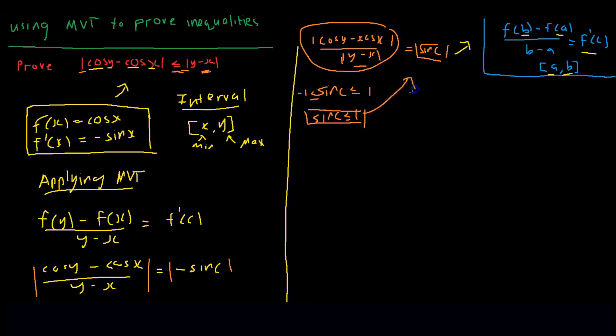Applying this back into this, we have the absolute value of cos y minus cos x over absolute value of y minus x is equal to sin of c, which is less than or equal to 1. Now, we have absolute value of cos y minus cos x over absolute value of y minus x is less than or equal to 1.